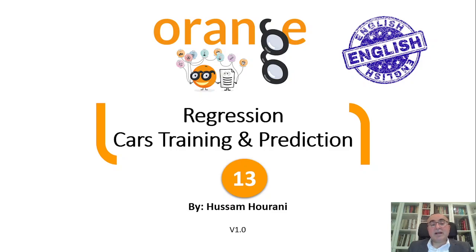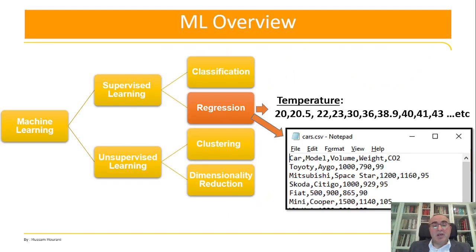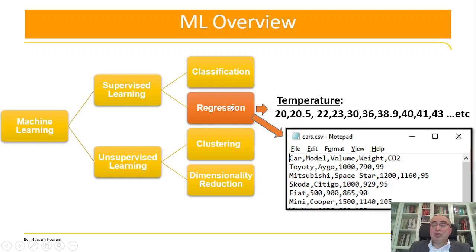Hello everybody, this is Hussam Horani again. Today we'll talk about regression and take a very simple example using cars. We've finished classification so far and gave many examples, and we also explained a few things in Orange Data Mining. Today we'll talk about regression.